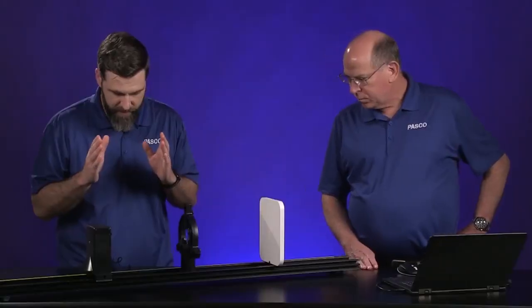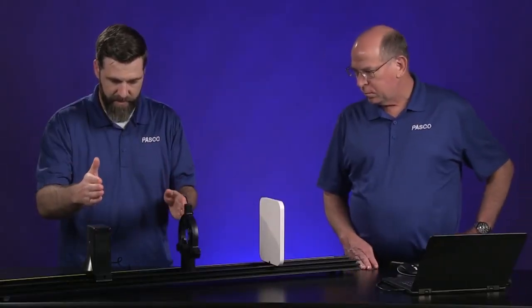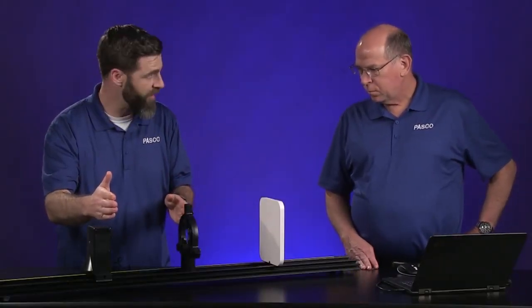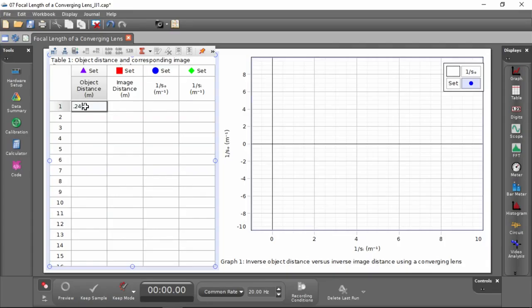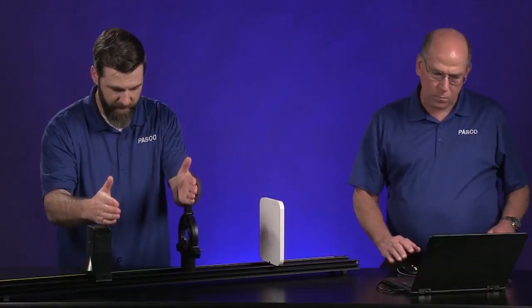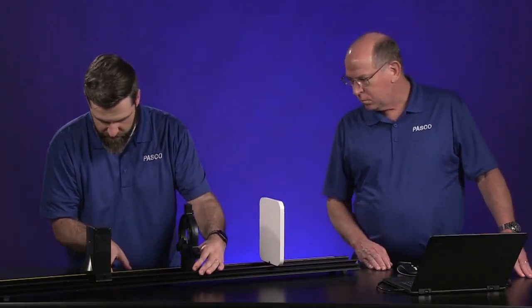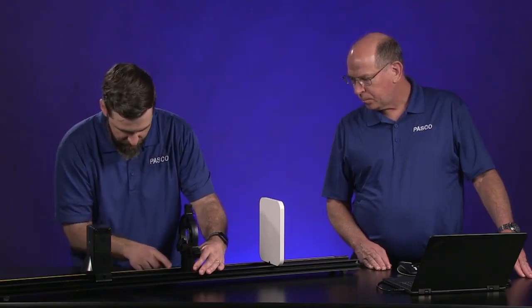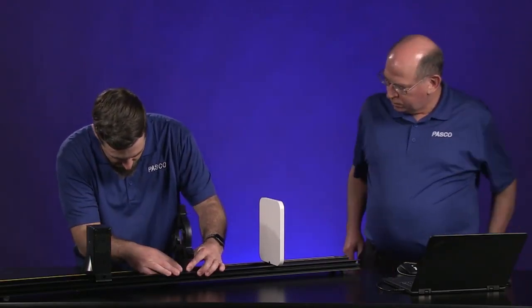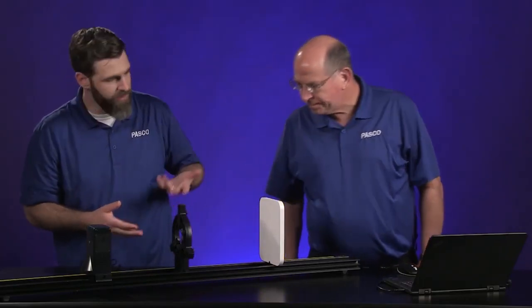I think we need to measure the object distance and then the image distance to do that. Okay, so let's start with an object distance of 24 centimeters. So that's the distance between the screen here and the lens - this is our object distance. I'm going to use the scale here on this track as my guide: 10, 20, 1, 2, 3, 4 centimeters.